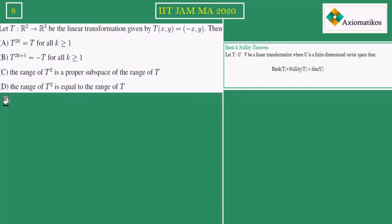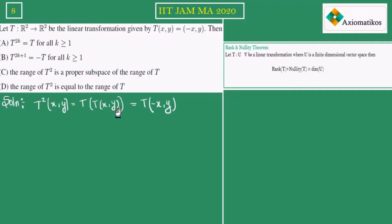The first option talks about T to the power 2k. In order to find T to the power 2k, I should first find T². T²(x, y) is defined as T of T(x, y). Since T(x, y) equals (−x, y), applying T again gives minus times (−x, y), which equals (x, y). Whatever input you take, you get the same output — that means T² is nothing else but the identity operator.